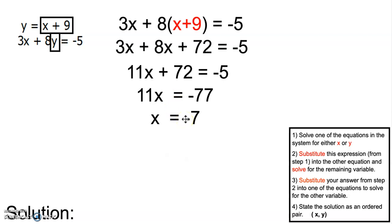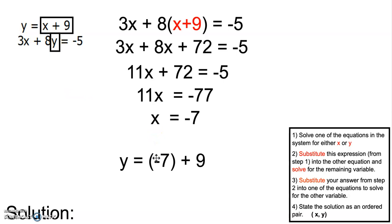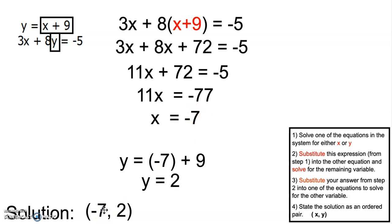So we can substitute — which is step three — our answer back into the equation. Y is equal to negative 7 plus 9, using the value we got from step two and plugging it back in. Negative 7 plus 9 is positive 2, so our solution is the point (negative 7, positive 2).